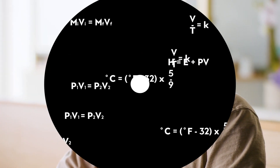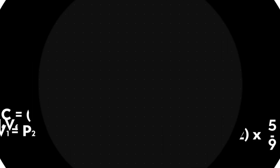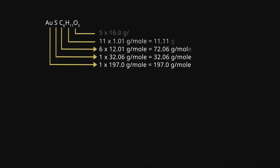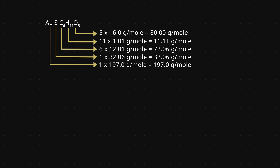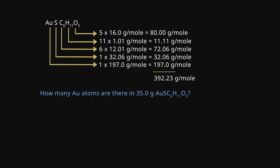Let's do the calculation for aurothioglucose first. We're going to start with 35 grams of this compound and determine the number of gold atoms in it. We can use the formula AuSC6H11O5 to determine the molar mass of the compound, which is 392.23 grams per mole. We can use this molar mass to determine the moles of aurothioglucose, and from there determine the moles of gold atoms. Let's set up our calculation using dimensional analysis.